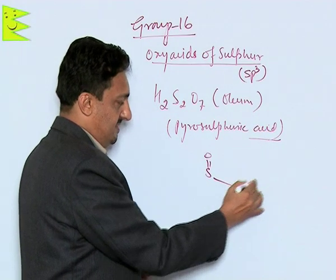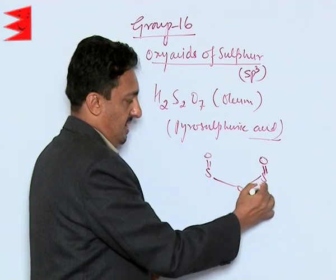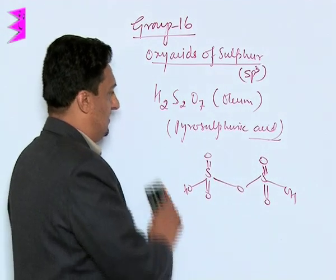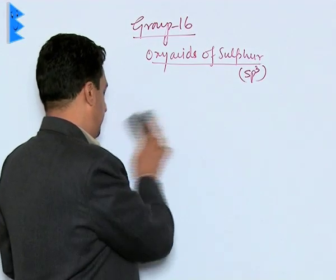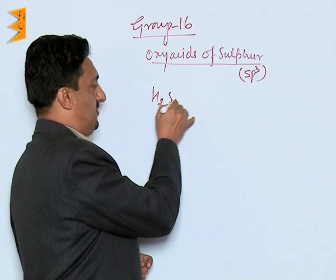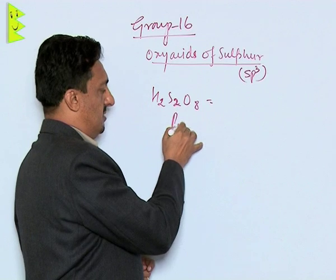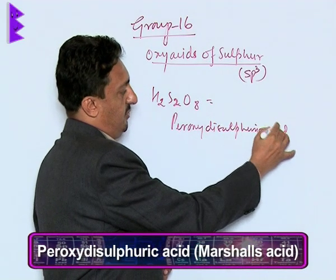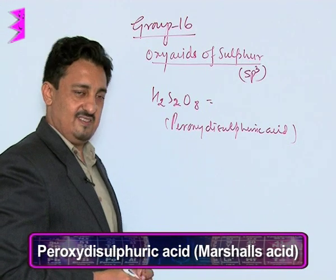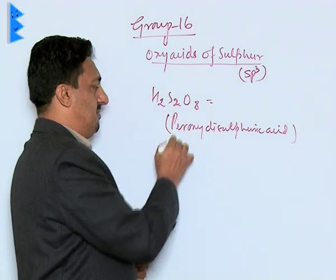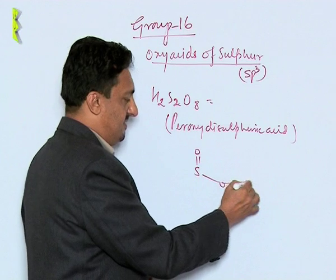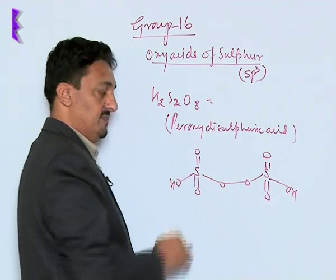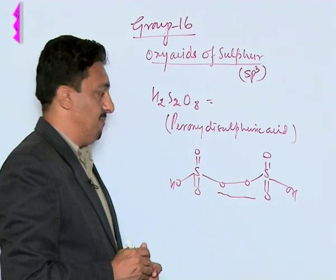The structure of H2S2O7 shows two sulphuric acid units joined through one common bridging oxygen. The next oxy acid is H2S2O8, called peroxydisulphuric acid, also known as Marshall's acid. It is obtained by electrolysis of concentrated sulphuric acid and contains a peroxy linkage (–O–O–) between the two sulphuric acid units.